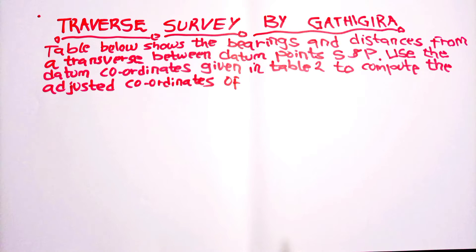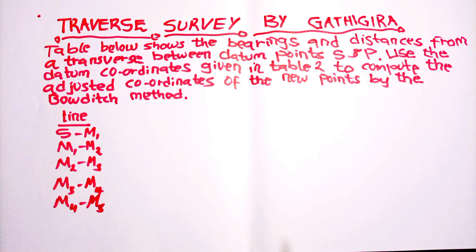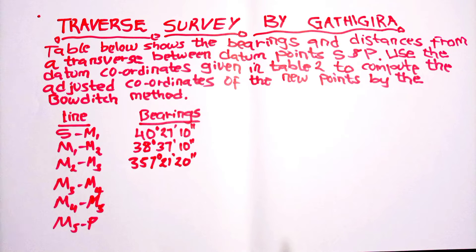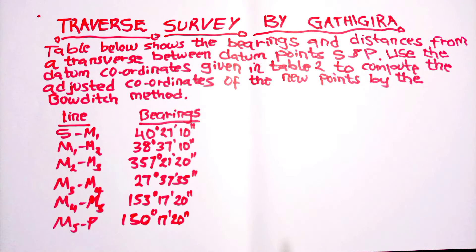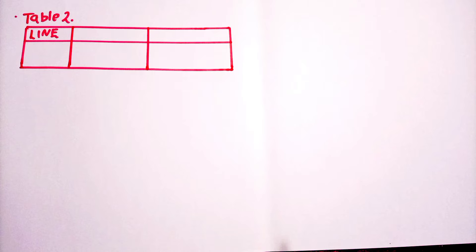We are going to have a table containing the lines, the bearings, and the distances. We will also have a second table containing the northing and the easting — those are the coordinates from which we are supposed to produce the other intermediate coordinates. From point S to point P, the bearing is given as 40 degrees 27 minutes 10 seconds.